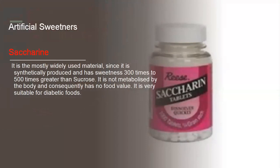Next is saccharin. It is the most widely used material since it is synthetically produced and has sweetness 300 to 500 times greater than sucrose. It is not metabolized by the body and consequently has no food value. So it is very suitable for diabetic foods.